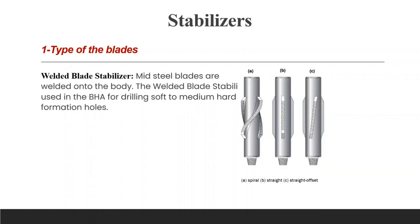The second type is the welded blade stabilizer, in which steel blades are welded onto the body. The blades are separate parts from the body and can take any shape — straight, offset, or spiral offset. It is used in soft to medium-hard formation holes. However, there is a risk that in hard and abrasive formations, the blades may fall off into the hole. Welded blade stabilizers are best suited for large hole sizes where the formation is softer, because they allow maximum flow rate due to the large space between the thin blades.